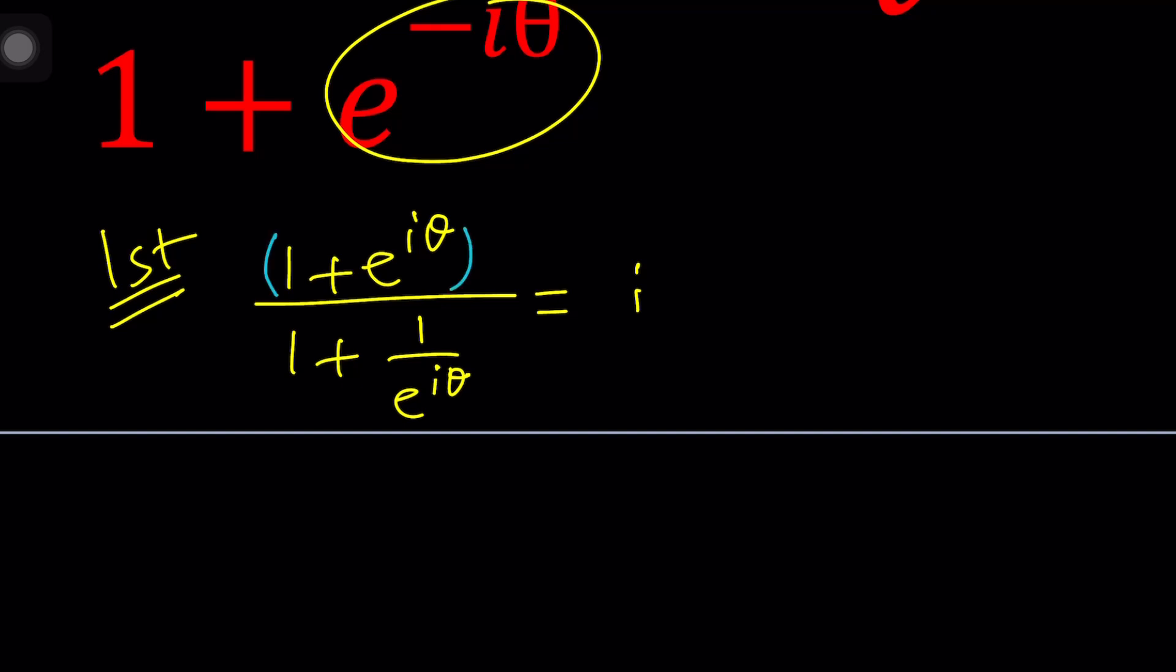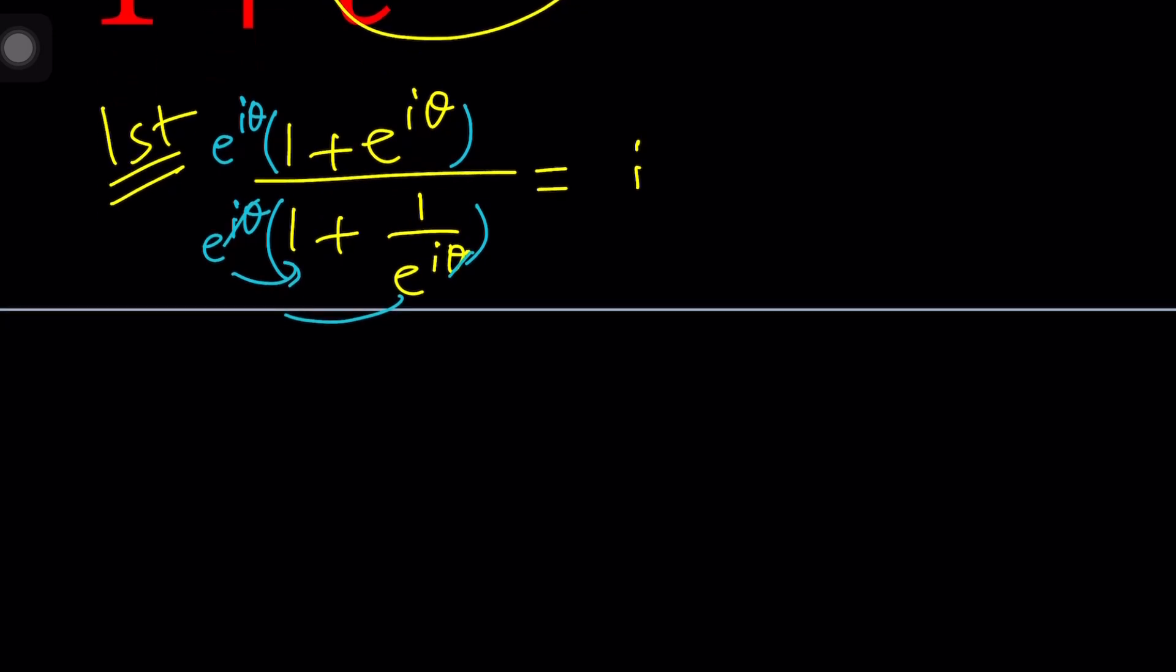Multiply by e to the iθ and multiply by e to the iθ. And when you distribute e to the iθ, they're going to cancel out here. So then we're going to get something like this. E to the iθ, let's keep it that way for now. Let's not distribute. And we can always distribute later. Divided by e to the iθ times 1, which is e to the iθ, plus 1. Awesome.